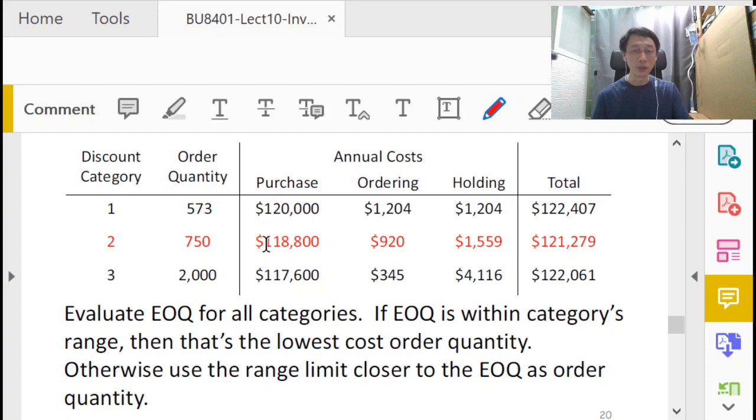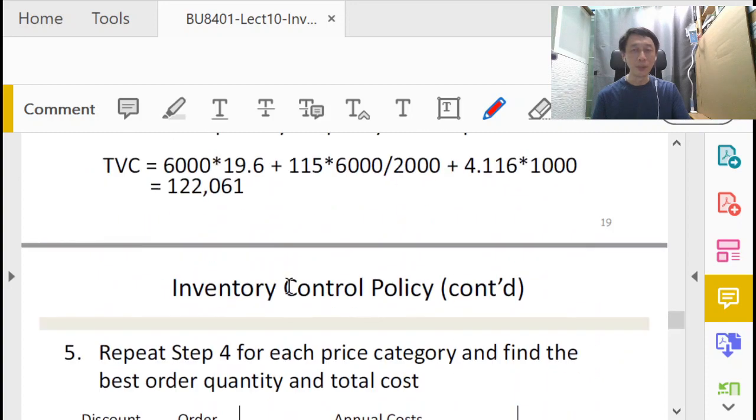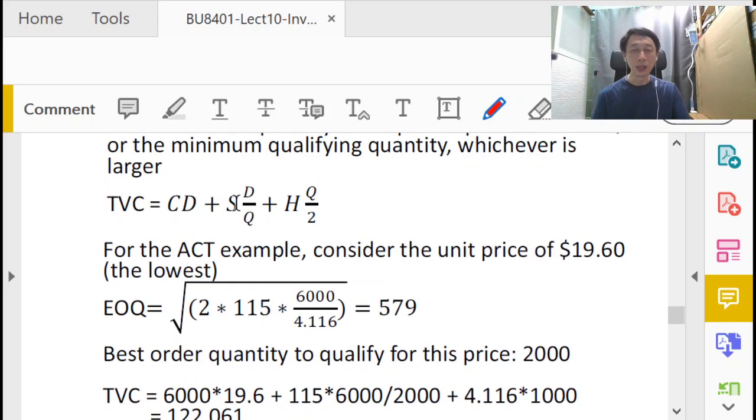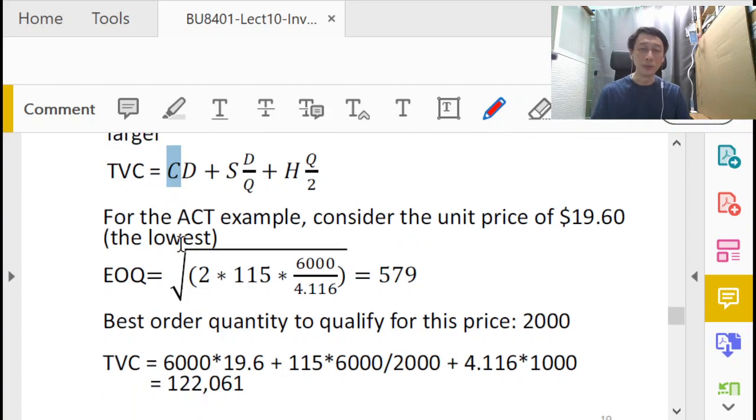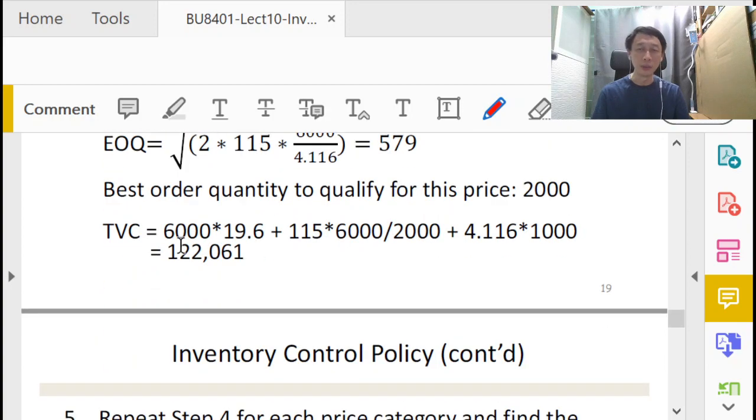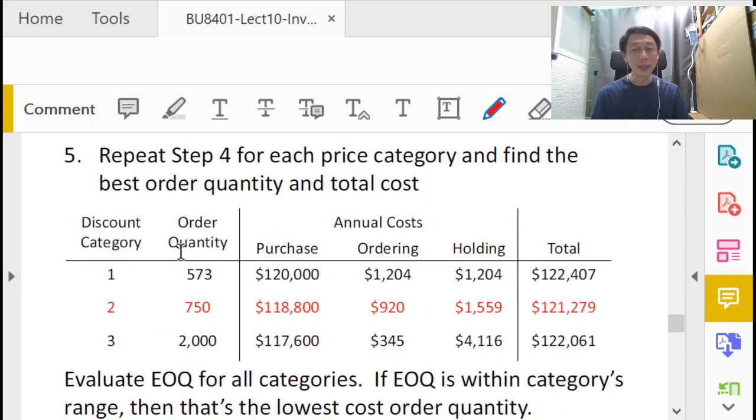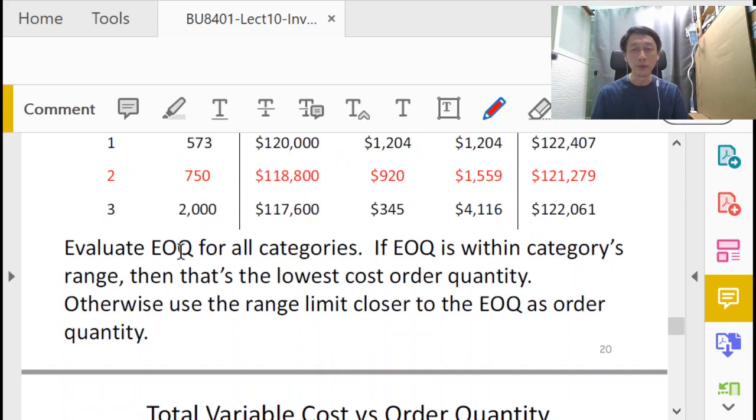It is important to add the purchase cost here. Back to our TC formula, you see that these two terms were the familiar annual setup cost and annual holding cost, but in addition we have C times D. As a reminder, this C is a function of Q, so it's not a constant anymore. We just basically use our little trick here to overlay the cost curves in order to determine which is the global best order quantity.